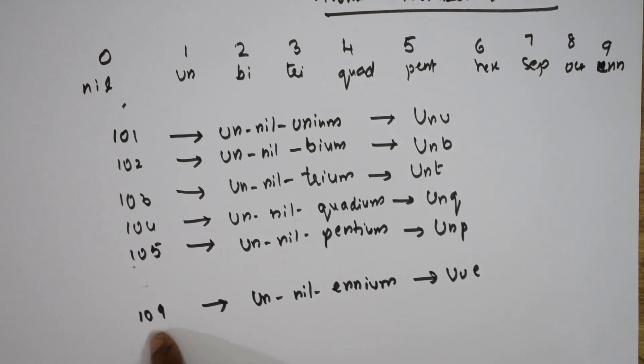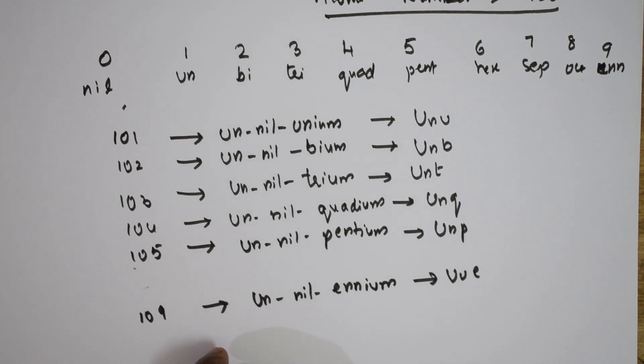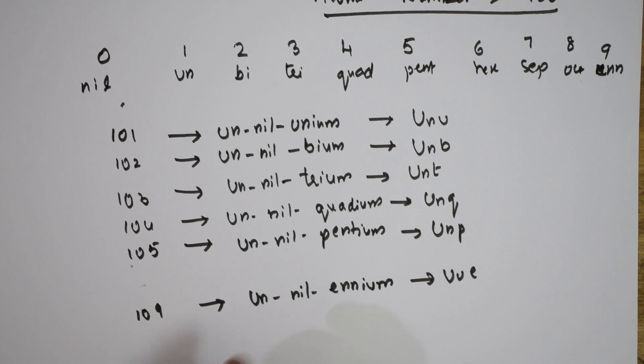Suppose if it is 110: un-un-nilium, symbol Unn. For 111, we call it un-un-unium, symbol Uuu. For 112, it is un-un-bium, Uub, like that.